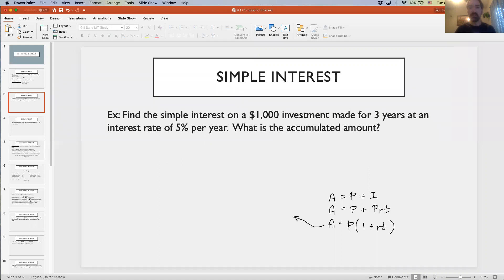Here's an example. We want to find the simple interest on a $1,000 investment made for three years at an interest rate of 5% per year, and also, what is the accumulated amount?